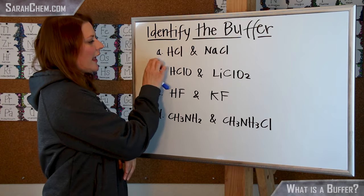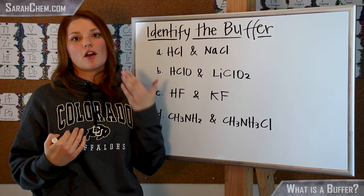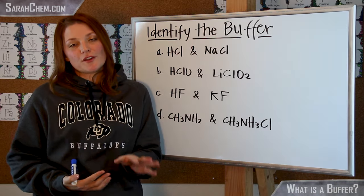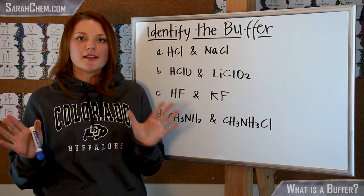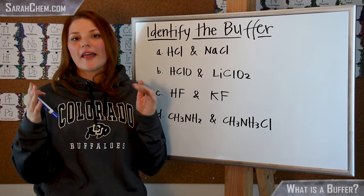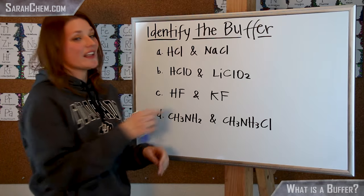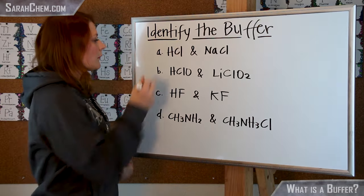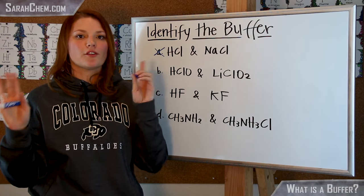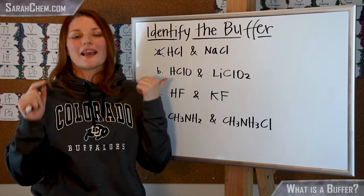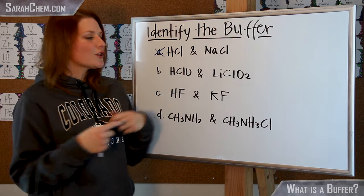If you take a look at example A, the first thing I look at is HCl. I recognize that HCl is a strong acid. Generally in your courses you're going to have six to eight strong acids that your teachers ask you to memorize, and if it's not on that list, you can assume it's weak. HCl is a strong acid, so automatically you can disqualify this without having to look any further — I know I cannot make a buffer with a strong acid.